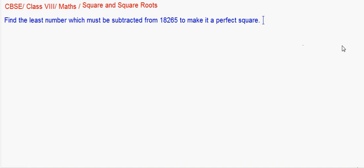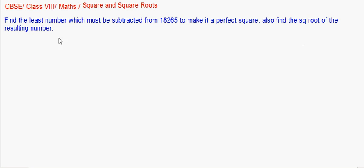We also need to find the square root of the resulting number. Let us see by what number — so that 18265 is not a perfect square — we need to find out. To do so, we will try to find the square root of this given number.